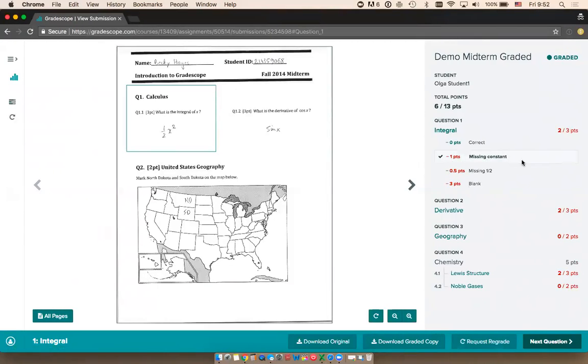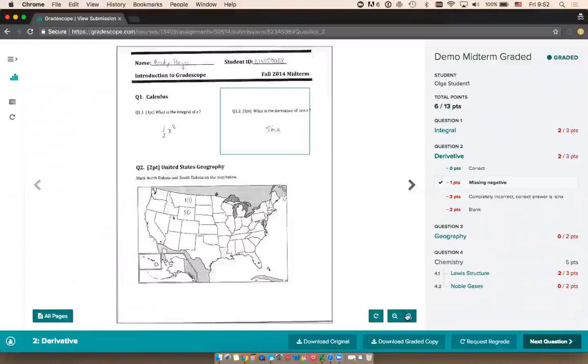As an instructor, if you only want students to see the rubric items that were applied to them, you have an option to do that on the settings page. But by default, students do see the full rubric for the full context of why they got points off. As a student, I can go through, look at my score, and zoom in on my submission.